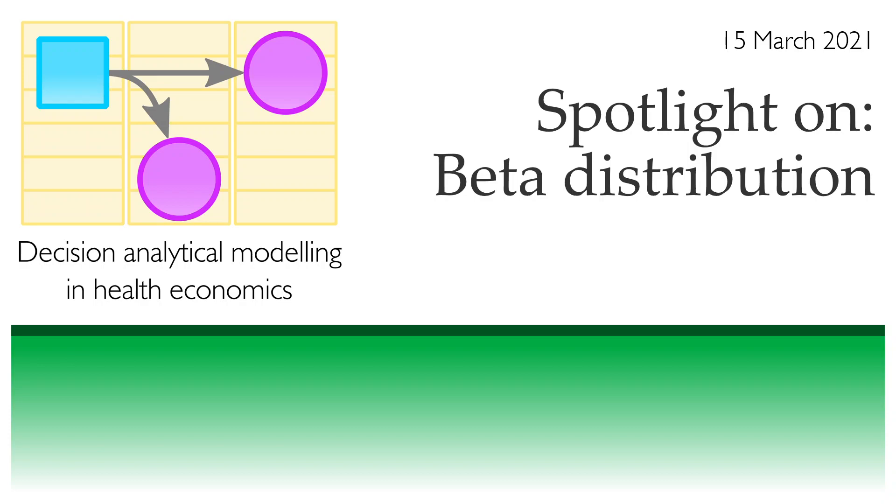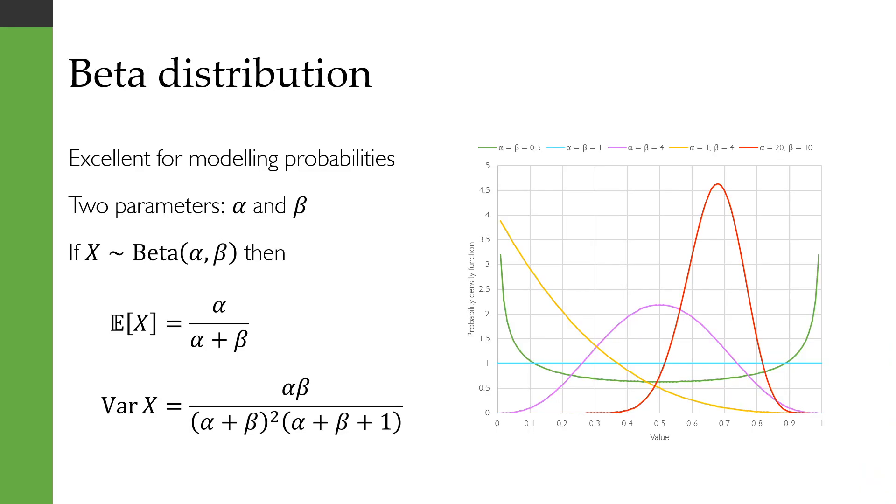Hi there. I'm going to be doing a few videos that just cast a spotlight on particular probability distributions that you're likely to come across when you're doing probabilistic sensitivity analysis. Each one of these videos should be fairly short and sweet. So without any further ado, let's start off by looking at the beta distribution.